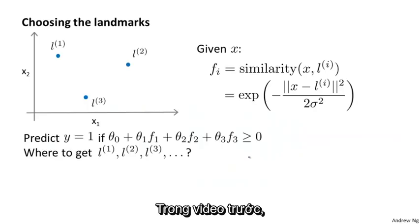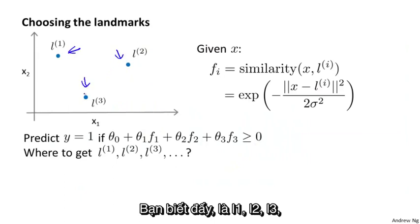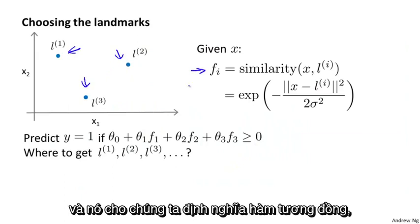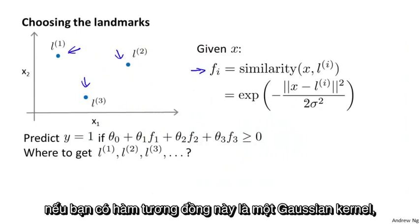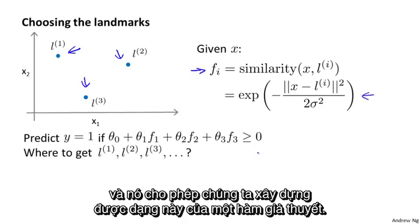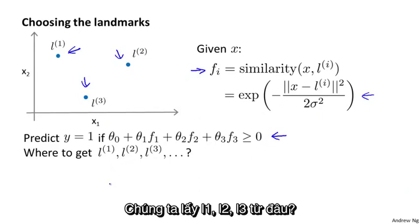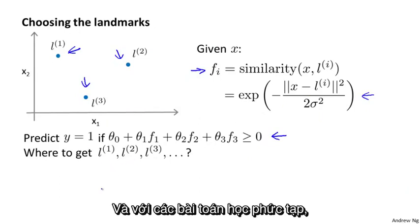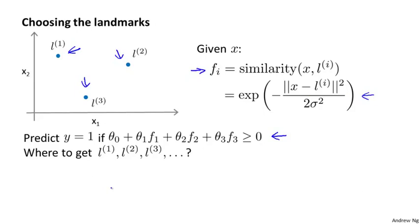In the last video, I talked about the process of picking a few landmarks L1, L2, L3, and that allowed us to define the similarity function, also called a kernel — or in this example, if you have this particular similarity function, this is a Gaussian kernel. That allowed us to build this form of a hypothesis function. But where do we get these landmarks from? And it seems also that for complex learning problems, maybe we want a lot more landmarks than just three of them that we might choose by hand.